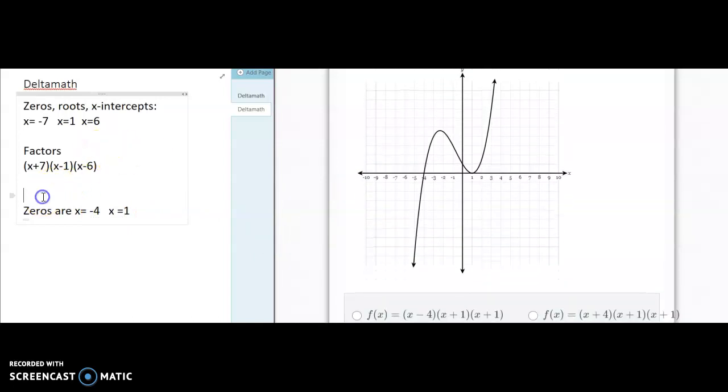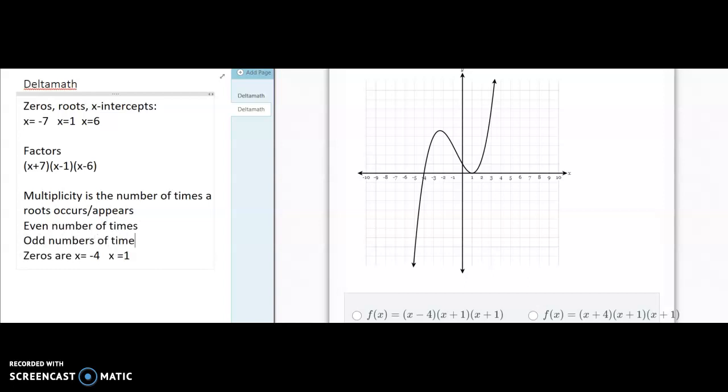Because delta math is talking about multiplicities here. What is a multiplicity? Multiplicity is the number of times a root occurs or appears. You could think even number of times. But in delta math, if it's even, we're going to assume it's twice.